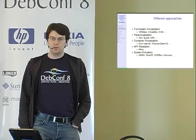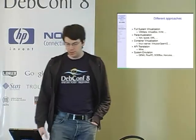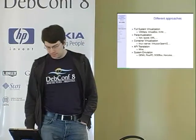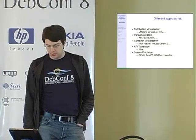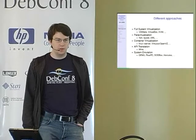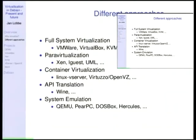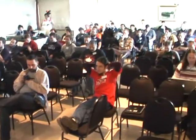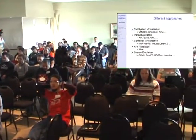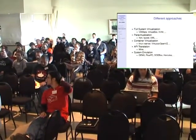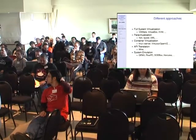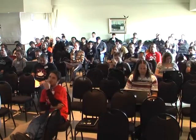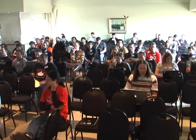There is para-virtualization, which has been done by Xen, and even before by UML. There is container virtualization, something like Linux vServer — I'm not sure if it's virtualization or containerization, there are different terminologies, but you use it for similar use cases. You have OpenVZ which supports that, and at the basic level, jails and chroot.